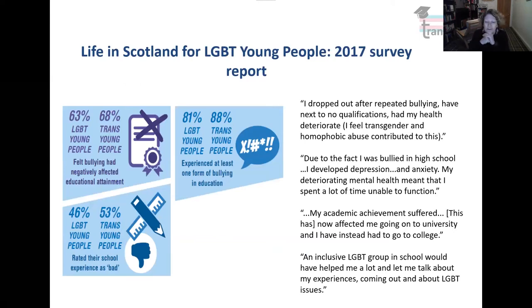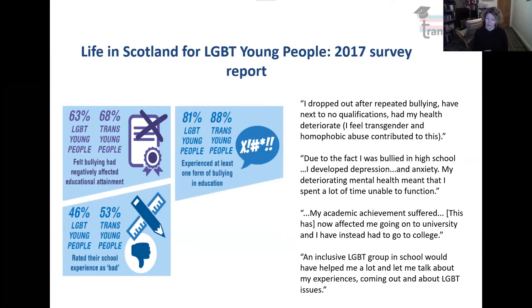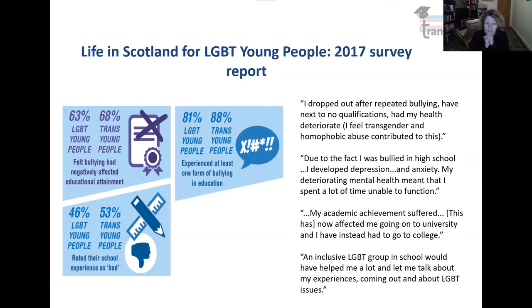LGBT Youth Scotland have done some amazing work reporting on the experiences of young LGBT people, and their most recently published survey was 2017. What they found was that LGBT young people had quite high incidences of bullying within the school, college, and university environment, but more so for trans young people. 68% of trans young people felt that bullying had negatively affected their educational attainment, and many young people just left school and got out of education as soon as they possibly could because of those experiences. A far higher proportion of them rated their school experience as bad compared to other groups.